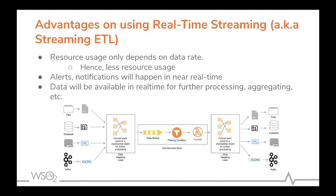Here is a high-level overview of what we can do in WSO2 Streaming Integrator. There are different sources with different types of data formats. Those can be converted into a common data stream using the data mapping layer inside the Streaming Integrator. That data stream can go through whatever filtering conditions and transformations implemented via Siddhi, then converted back to whatever the target endpoint desires and pushed to those target endpoints. That's how real-time streaming happens.